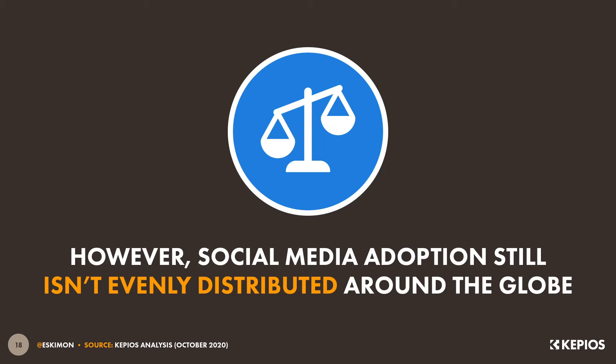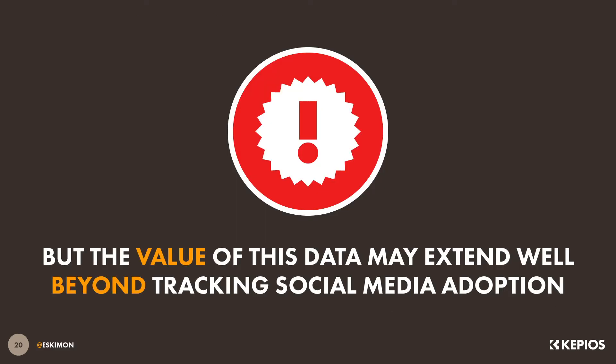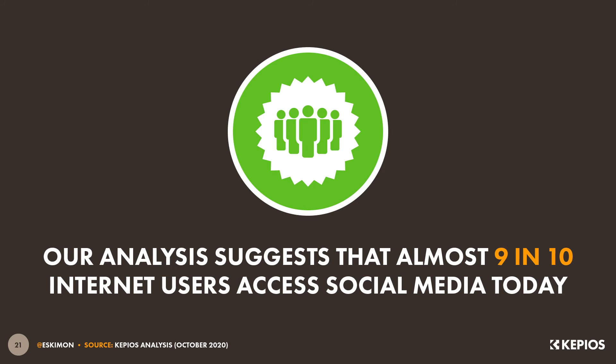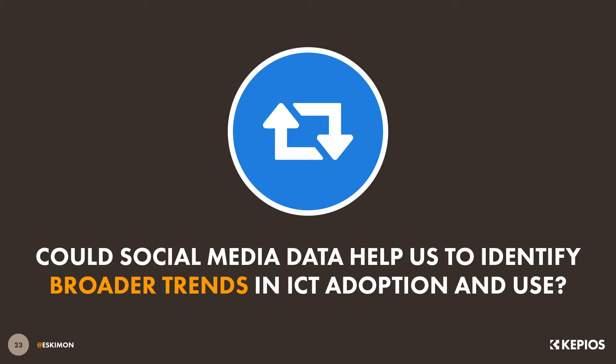However, just as we see with broader internet use, social media use still isn't evenly distributed around the world. If we compare the latest social media user numbers to eligible populations aged 13 and above, we see that adoption varies significantly by region. For example, roughly 8 in 9 people aged 13-plus across Central and Southern America use social media today, but that figure drops to less than 1 in 8 in middle Africa. Our analysis suggests that nearly 9 in every 10 internet users around the world now use social media, and these high levels of adoption may point to a potential opportunity — could social media data help us identify broader trends in ICT adoption and use around the world?